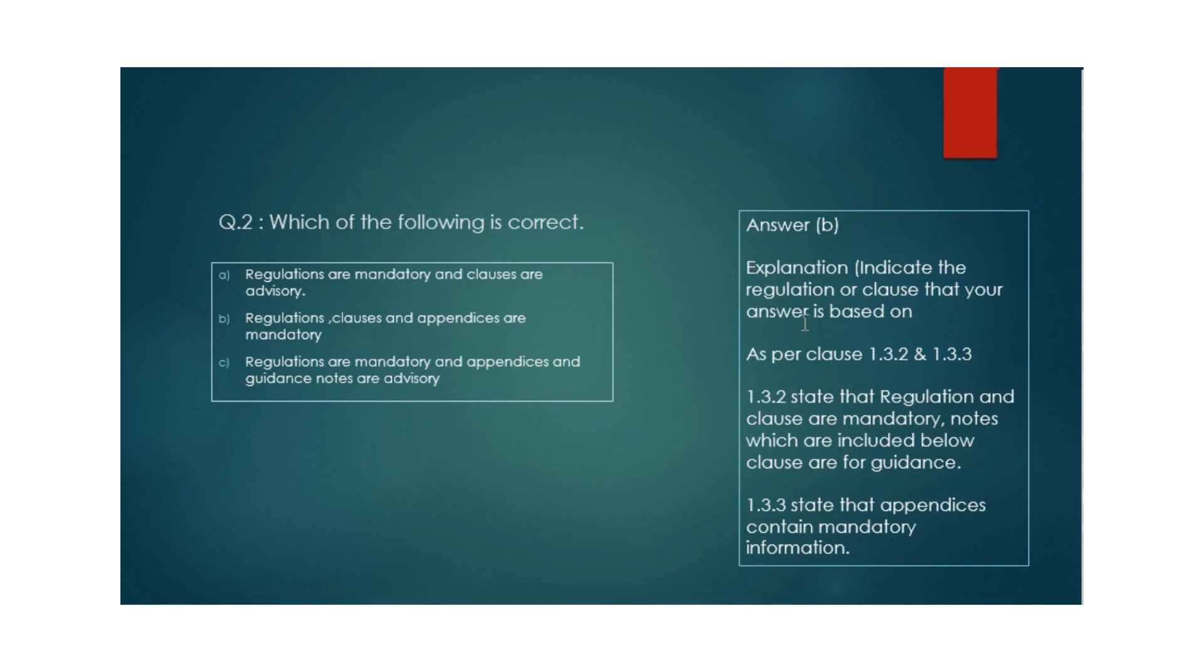You have to not only tick option B as the correct answer, but also explain based on which clause your answer is option B. In the exam paper, you have to write as per clause 1.3.2 and 1.3.3.3. You have to remember or read the wiring regulation book, and during the exam the book will be with you, so you only need to memorize which part to reference.